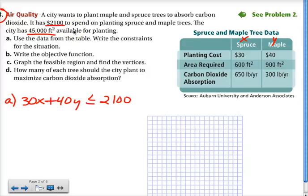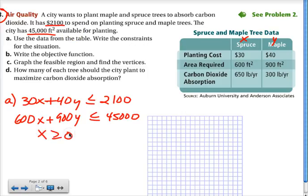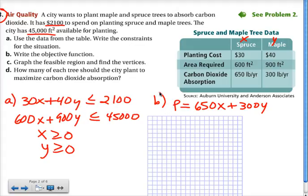And then the next total that they gave me was the 45,000. And again, I can't go over that. That is the area that they have available for planting. And as I look at the chart, I see that it's going to be 600 for the spruce and 900 for the maple. Now, obviously, you can't have a negative amount of trees, so your spruce are going to have to be greater than or equal to zero, and your maple are greater than or equal to zero. And last but not least, I need my objective function. The objective of all of this was for them to get more carbon dioxide absorption. So that's going to come from 650 pounds per year from the spruce and 300 pounds per year from the maple. And what they want to do is maximize that. So A is writing the constraints, B is writing that objective function, and then C, we want to graph all of this.